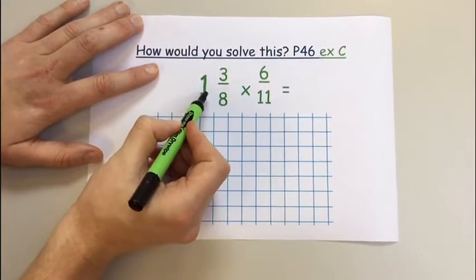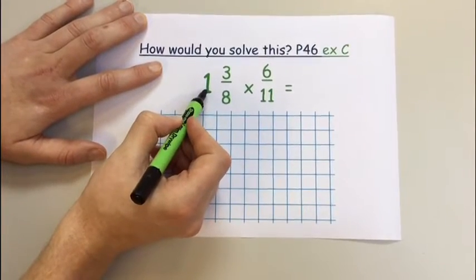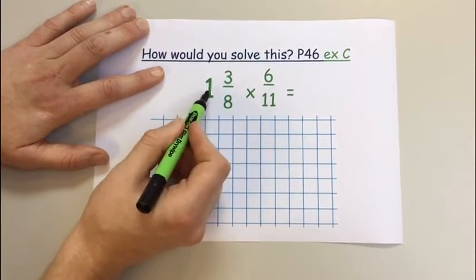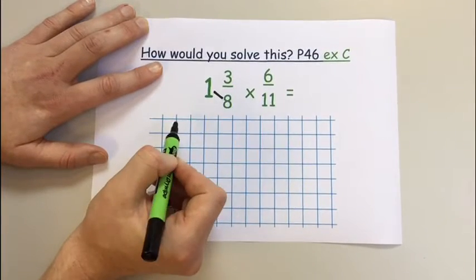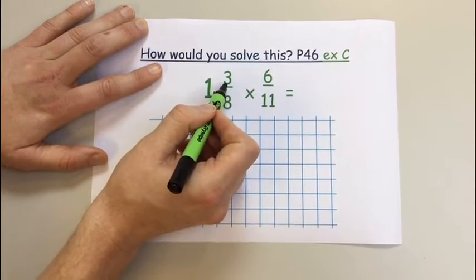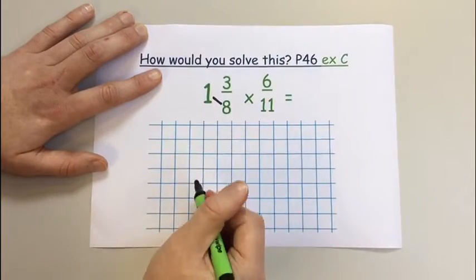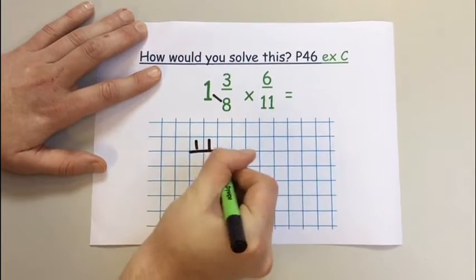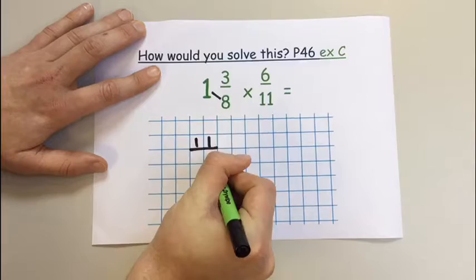To do this, one whole is the same as 8 over 8, or we can do this by 1 times 8 is 8, plus the remaining 3... 11. So 1 and 3 eighths is the same as 11 over 8.